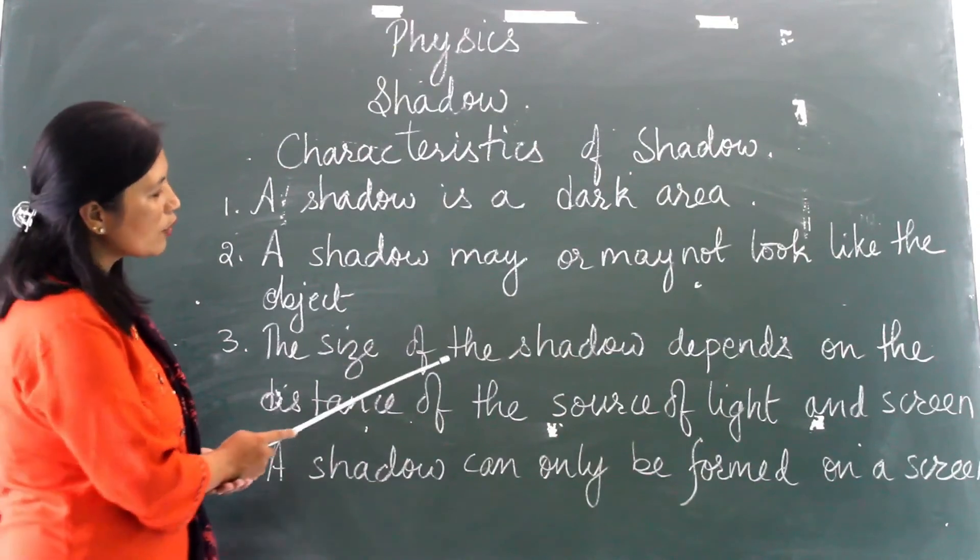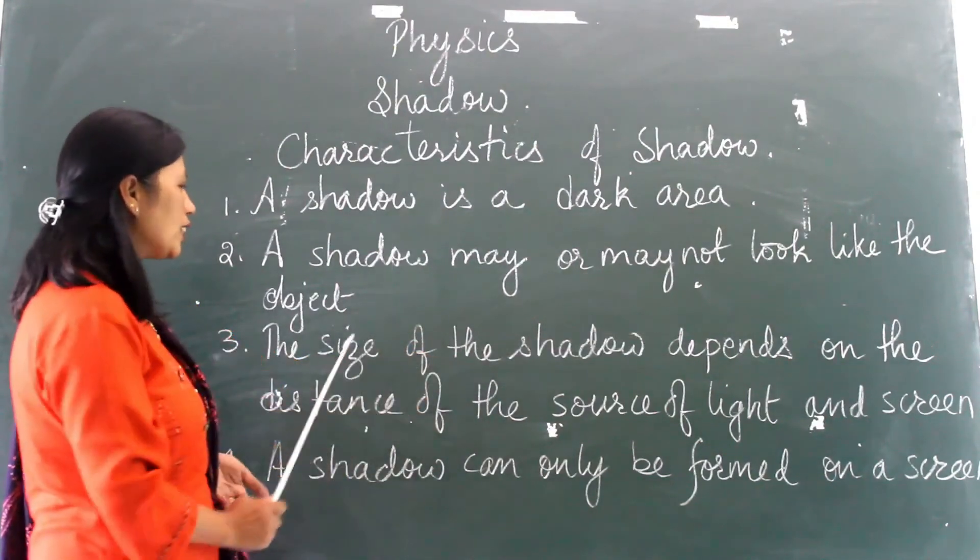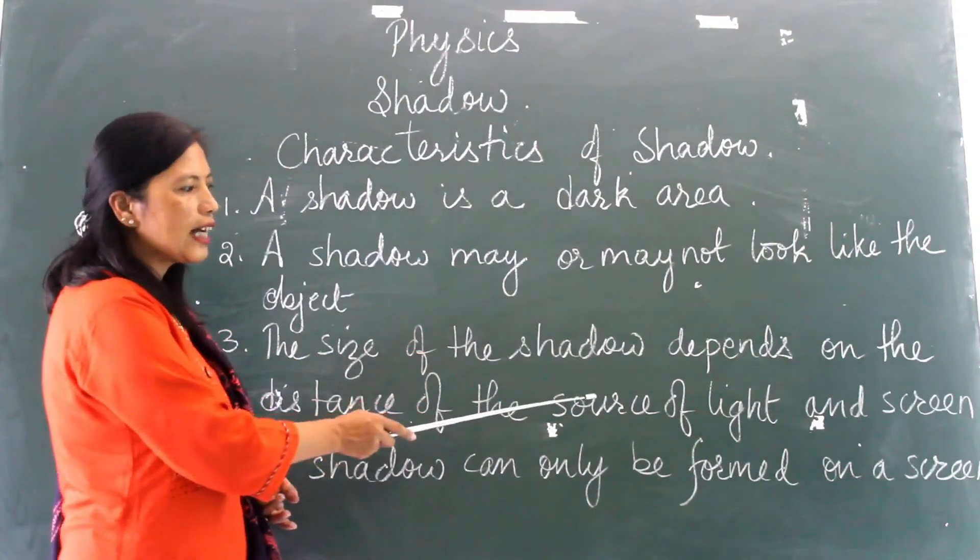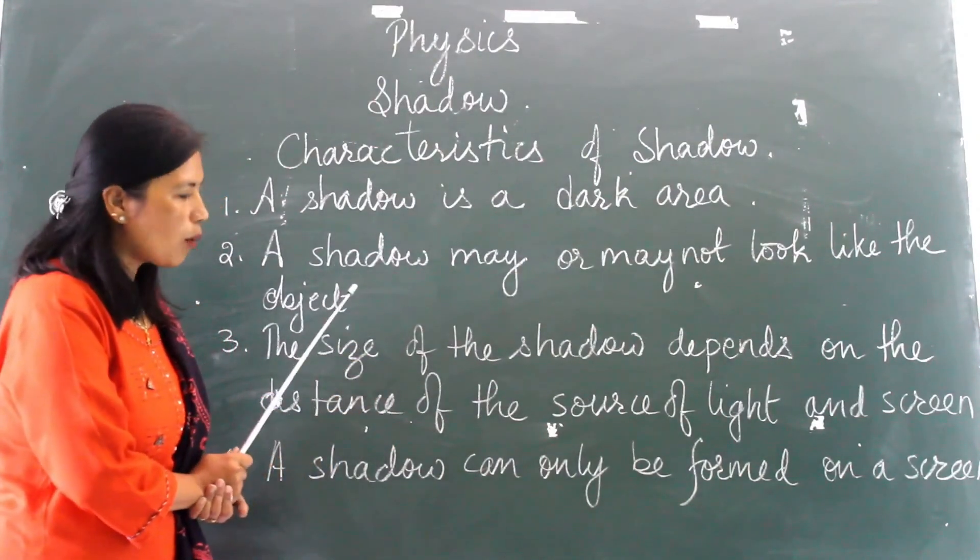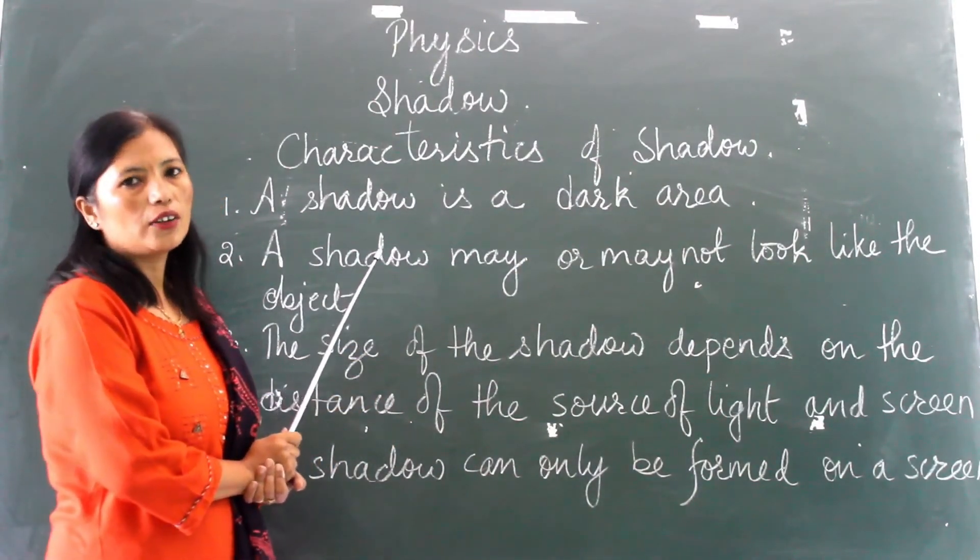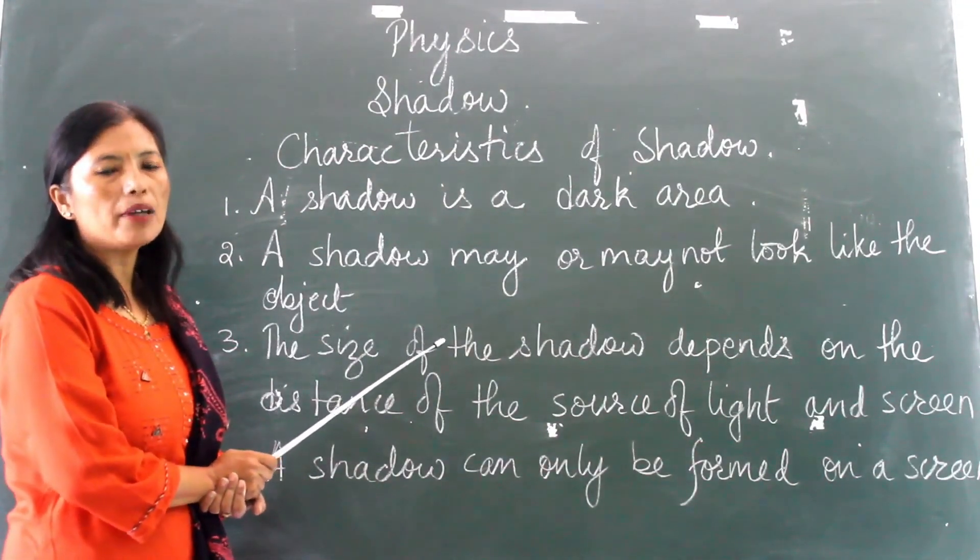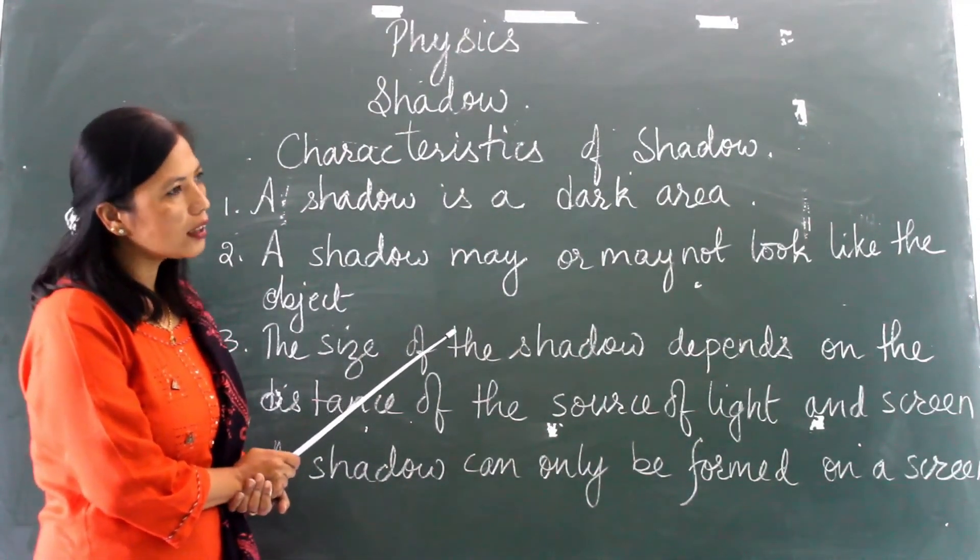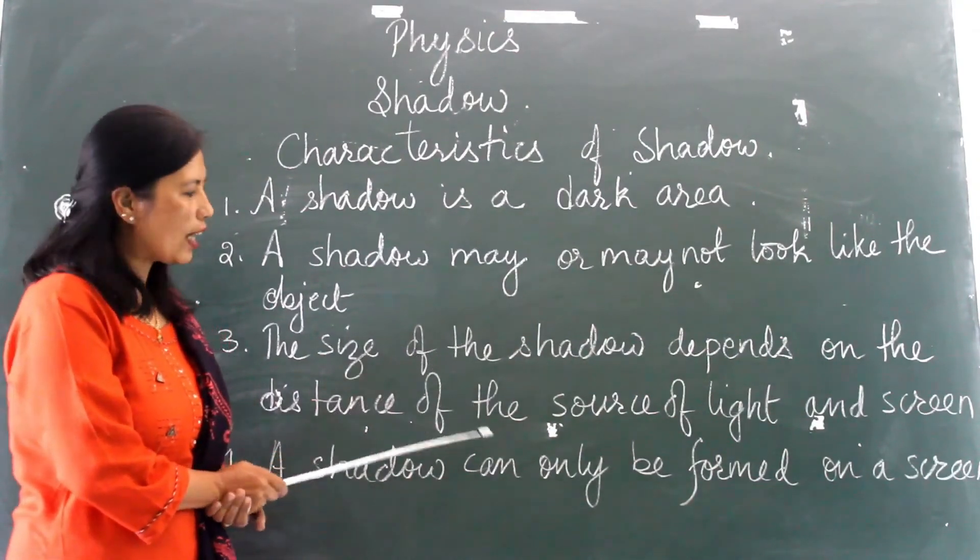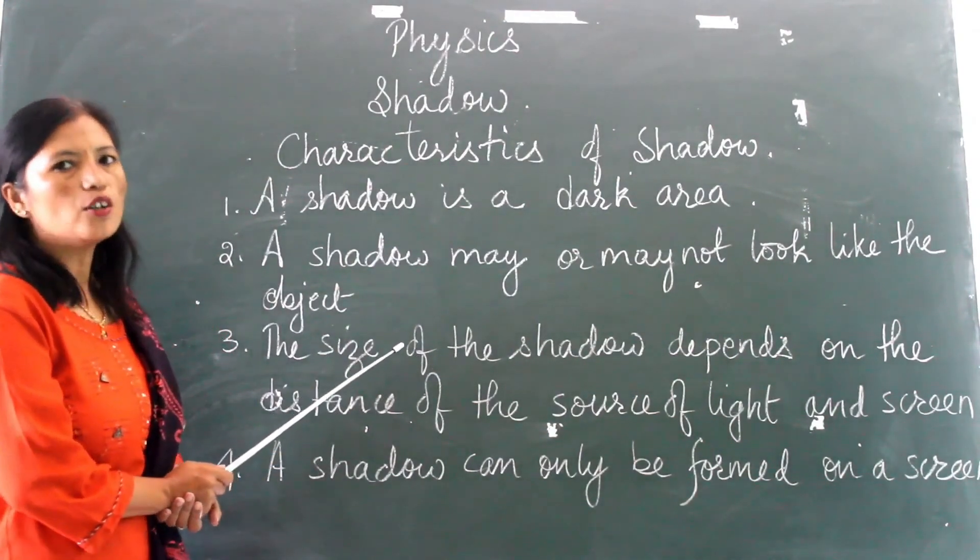The size of the shadow depends on the distance of the source of light and the screen. If you take the object near to the source of light, the shadow will be bigger. But if you take it farther away from the source of light, the shadow will be smaller.